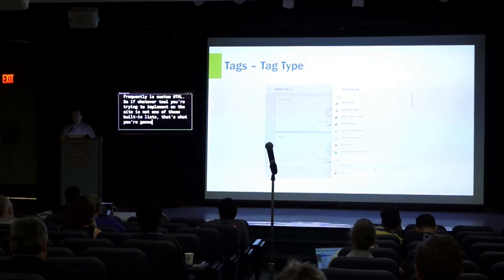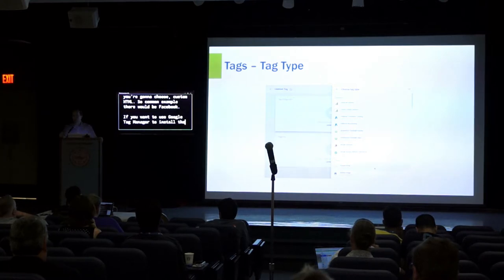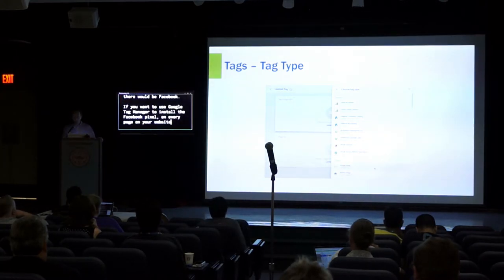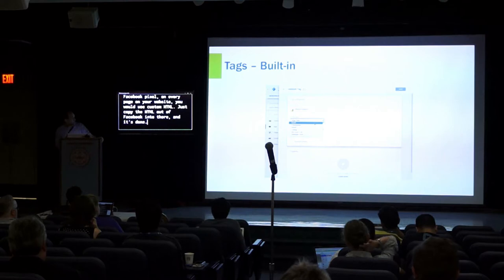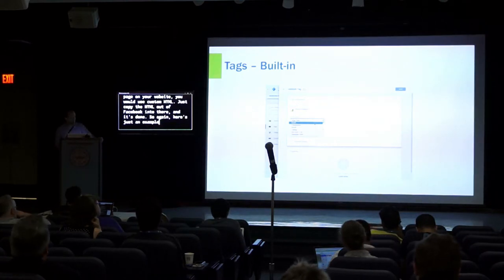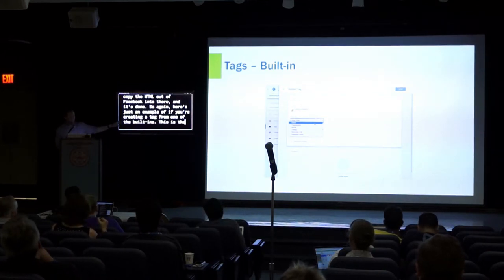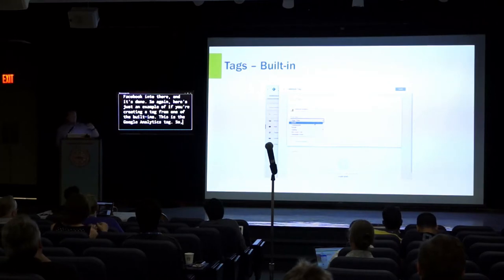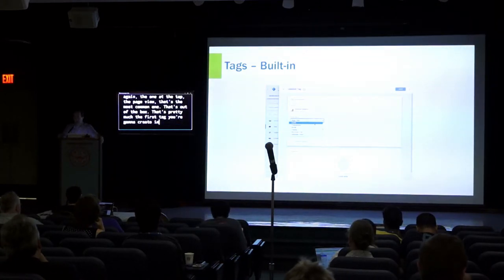One of the other tag types that gets used very frequently is custom HTML. If whatever tool you're trying to implement on the site is not on the built-in list, you choose custom HTML. A common example would be Facebook — if you want to use Google Tag Manager to install the Facebook pixel on every page, you use custom HTML, just copy the HTML out of Facebook into there and it's done. Here's an example of creating a tag from one of the built-ins: the Google Analytics tag. The page view is the most common, and it's pretty much the first tag you're going to create in almost every case — to install the Google Analytics tracking code on every page of your website.